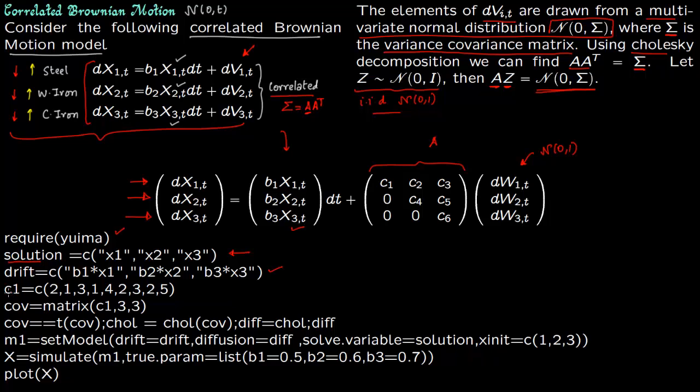Now say we have a variance covariance matrix. So you have three things, so you have a 3x3 variance covariance matrix. Again if you do not know what a variance covariance matrix is, have a look at my time series lecture. So this 3x3 matrix for steel, wrought iron and cast iron, I am just putting in some numbers. So these numbers are 2, 1, 3 that is the first row, then 1, 4, 2, and then 3, 2, 5.